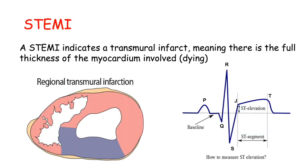A STEMI indicates a transmural infarct, meaning there is full thickness of the myocardium involved — all of that area is affected and essentially dying. As you can see in this ECG, there is ST elevation, so that segment is elevated.